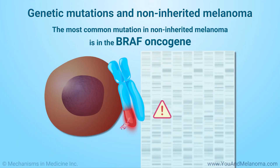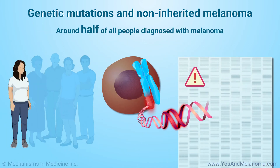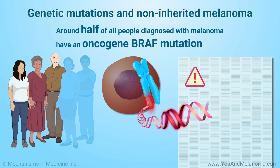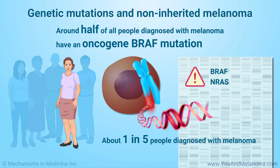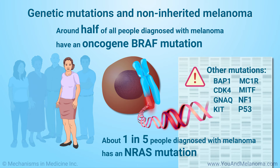The most common mutation in non-inherited melanoma is an oncogene called BRAF. Around half of all people diagnosed with melanoma have a BRAF mutation. However, not all moles with BRAF mutations will become melanoma. Another common mutation is in an oncogene called NRAS. About one in five people diagnosed with melanoma has an NRAS mutation. Several other genetic mutations may also be found in people with melanoma.